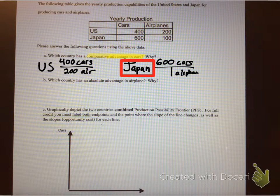Okay? So which country has an absolute advantage for airplanes? Well, that would be U.S. The U.S. can produce 200 airplanes, while Japan can only produce one. So that would be the United States.